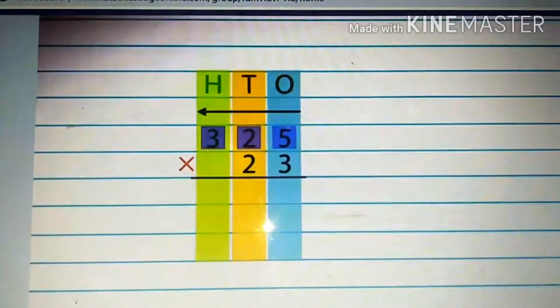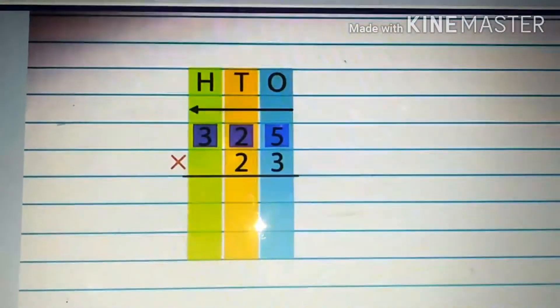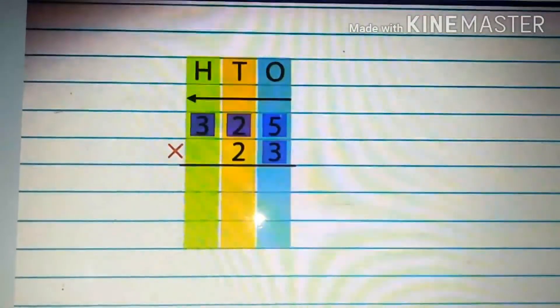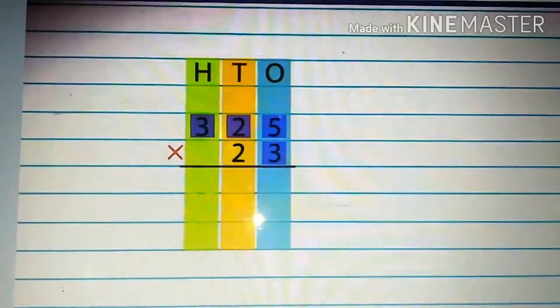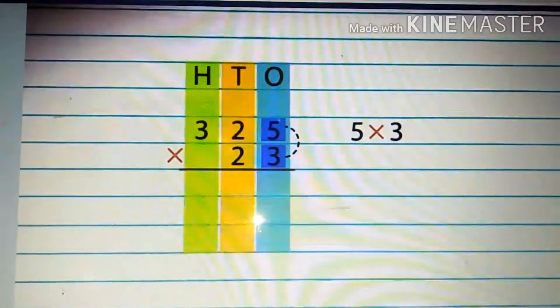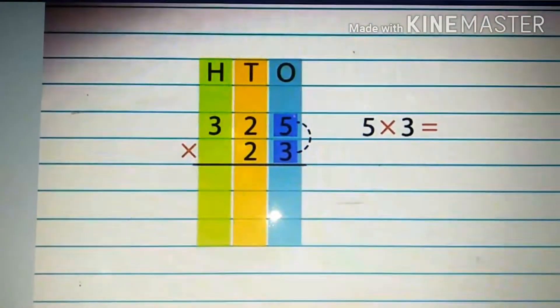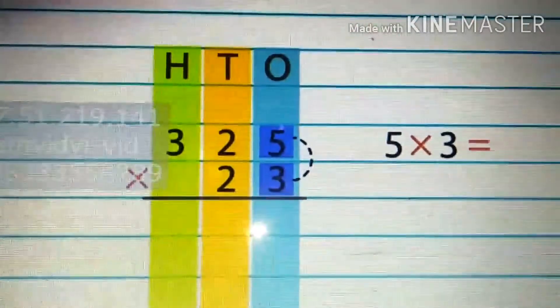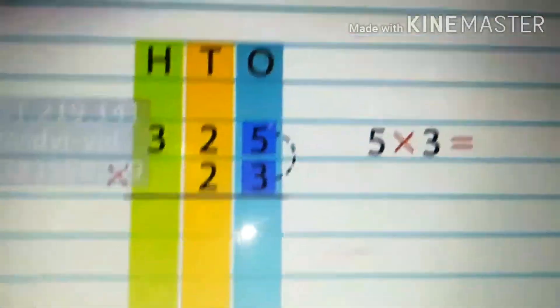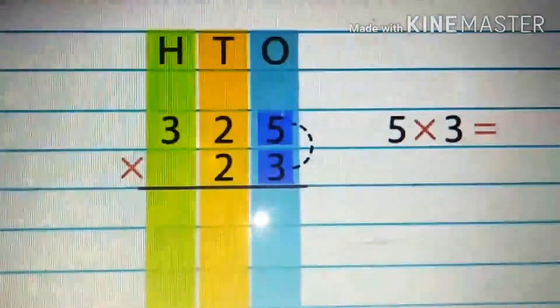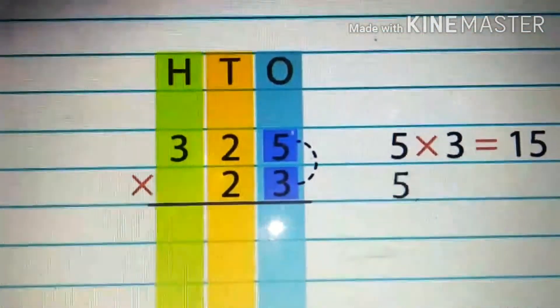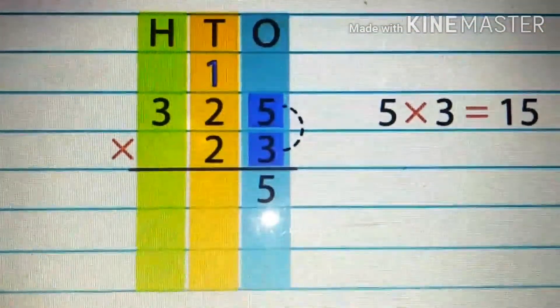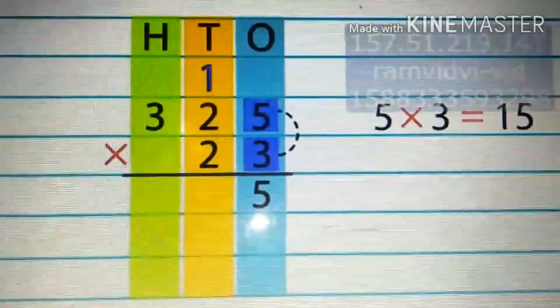To start with, we need to multiply the ones, tens, and hundreds of the first number one by one with the ones digit of the second number. So in this case, five multiplied by three gives fifteen.